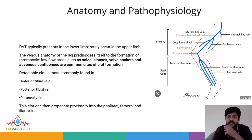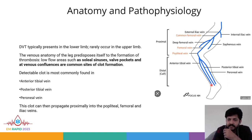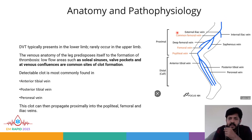Let's discuss the anatomy of the deep veins. As seen in the diagram, the anterior tibial vein, posterior tibial vein, and peroneal vein all join to form the popliteal vein, which continues as the femoral vein, joined by the deep femoral vein and saphenous vein to form the common femoral vein. The internal iliac vein joins here, ultimately forming the external iliac vein. The proximal deep veins extend superiorly, while the distal deep veins are mostly confined to the calf.